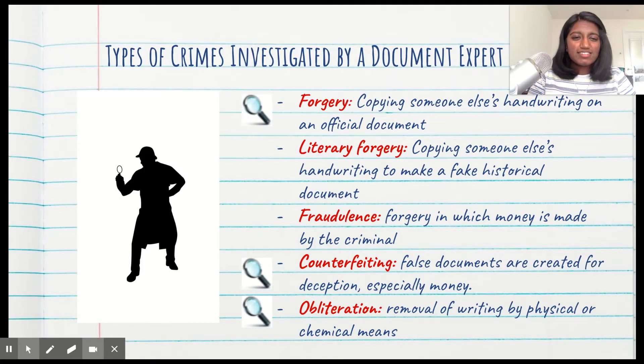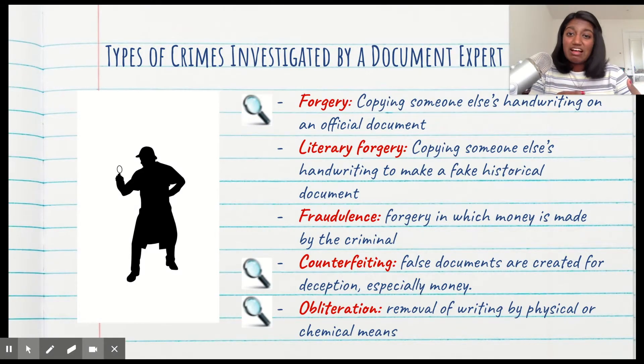So you might be thinking, Sarah, how much does a document expert actually have to do? There actually are quite a few crimes. One of the biggest ones is forgery—copying someone else's handwriting or especially signature on an official document. This can be as big as writing someone's signature on a contract that makes them lose a million dollars, to something more relatable like maybe forgetting your permission slip on a field trip and just writing your dad's signature. Both are actually crimes, examples of forgery.